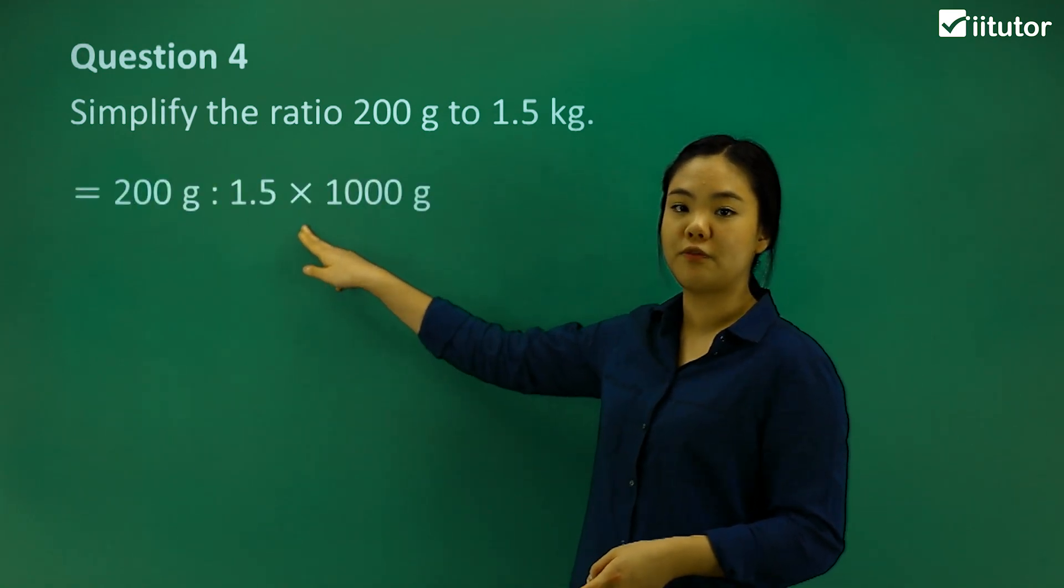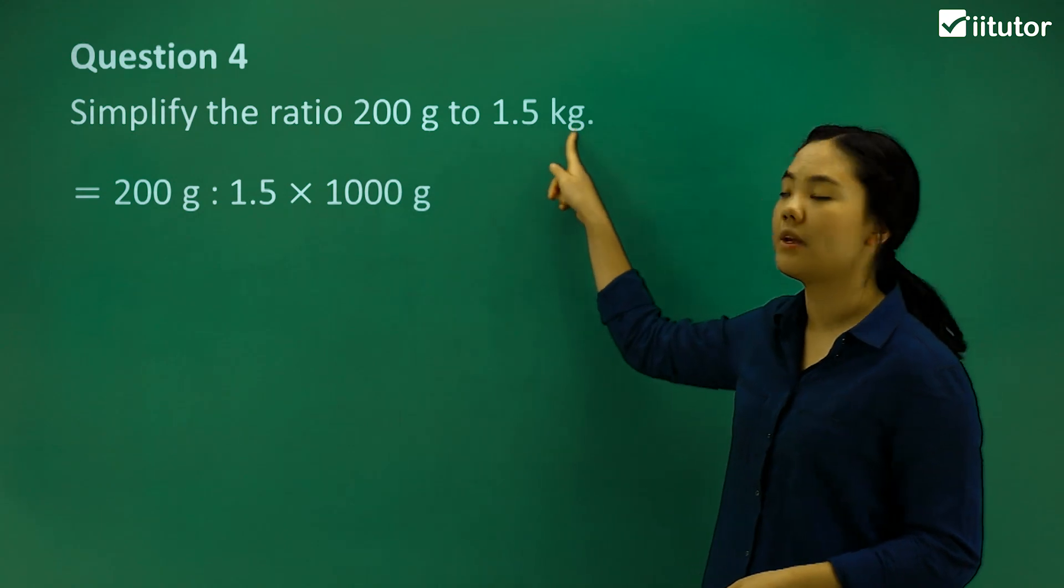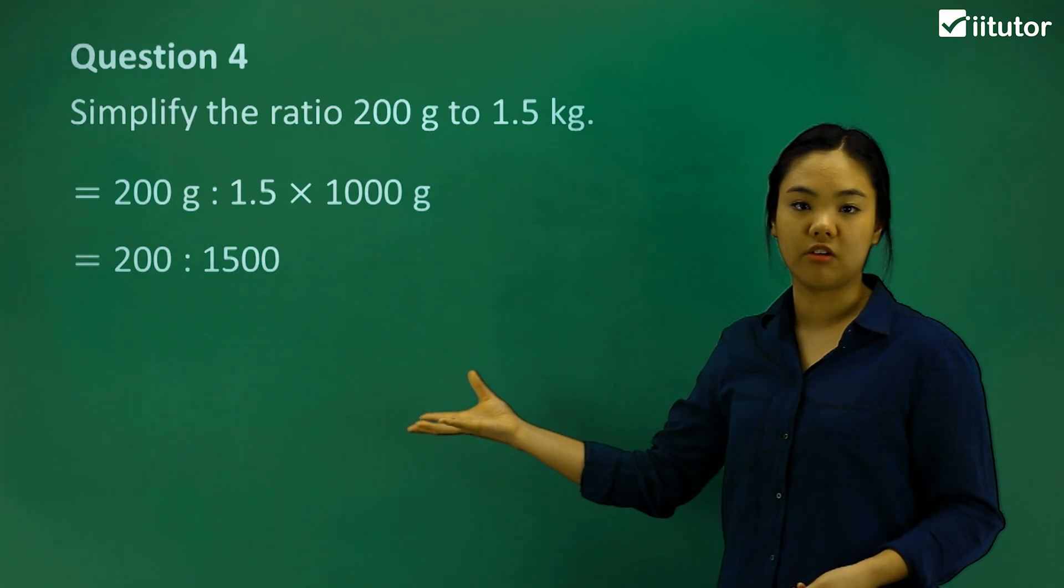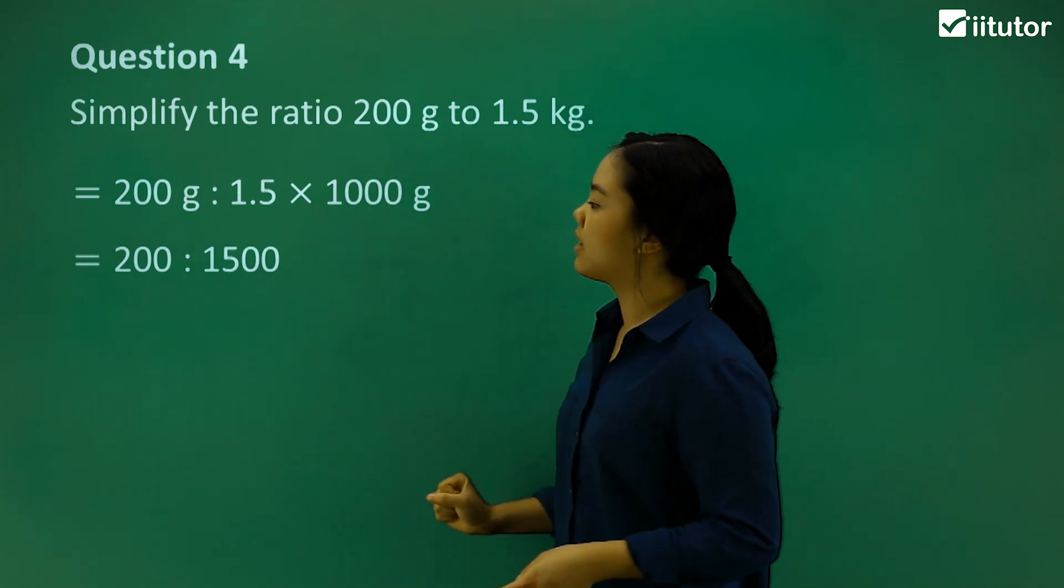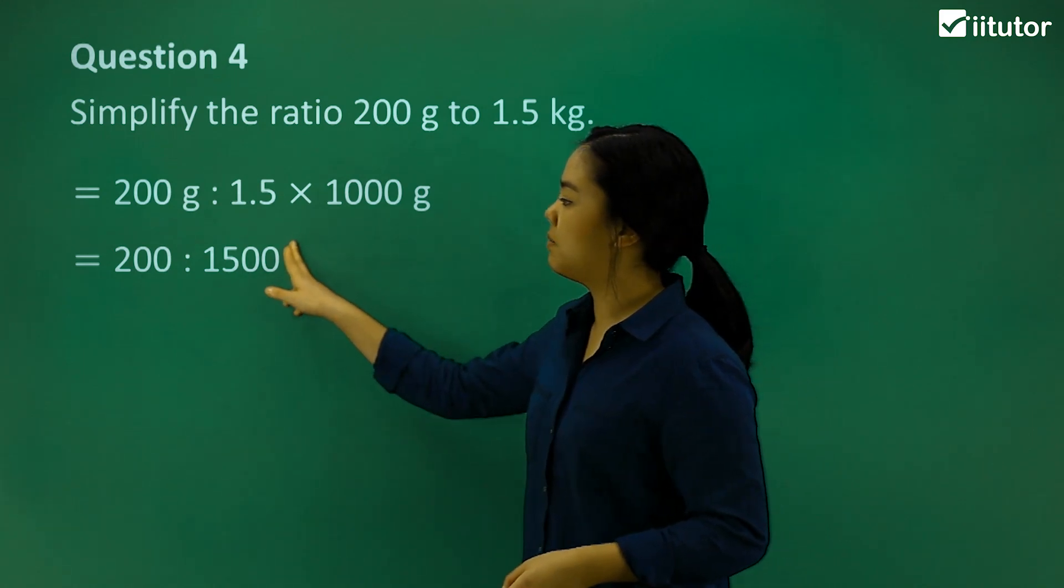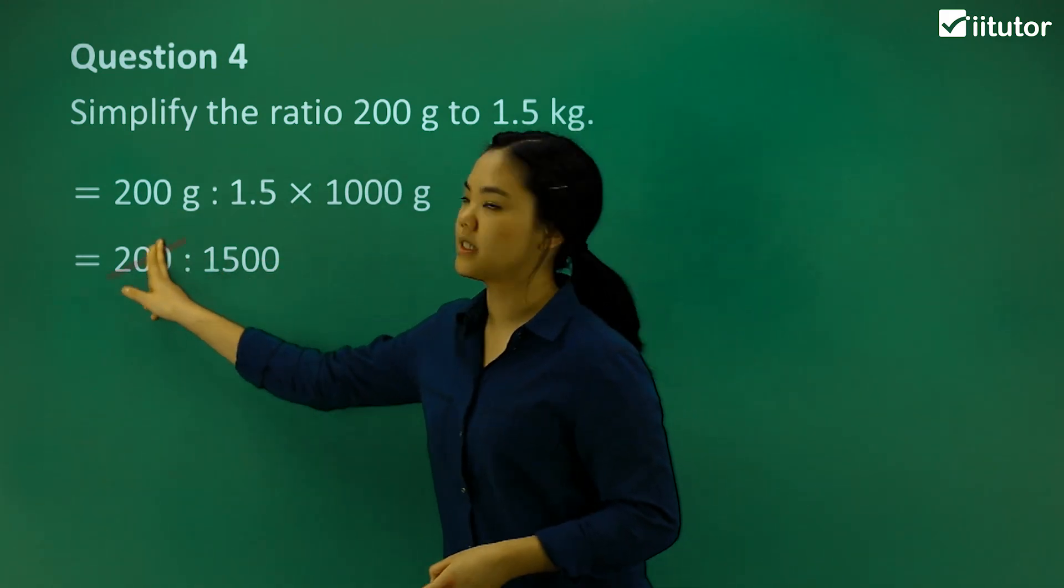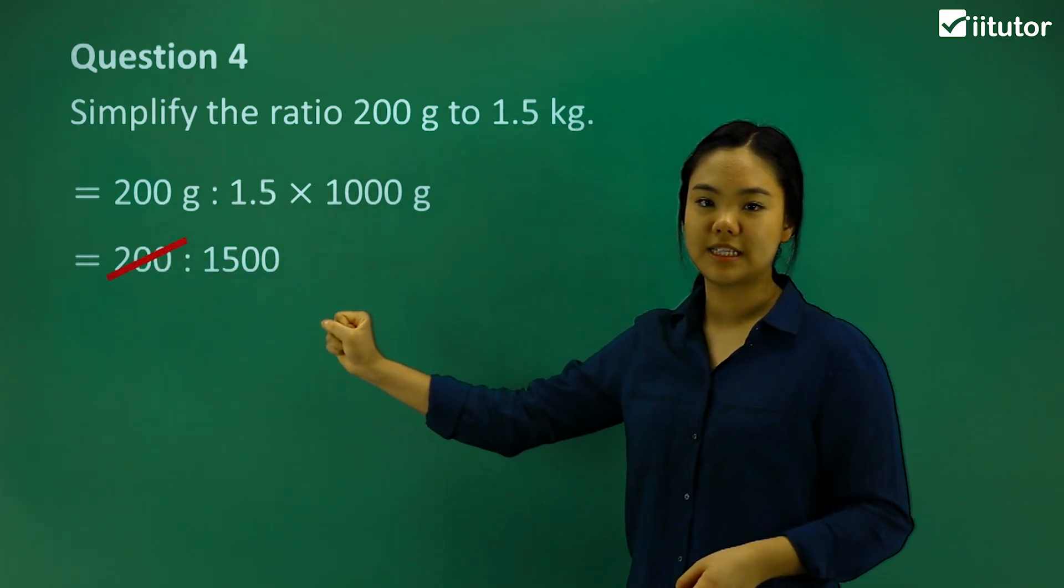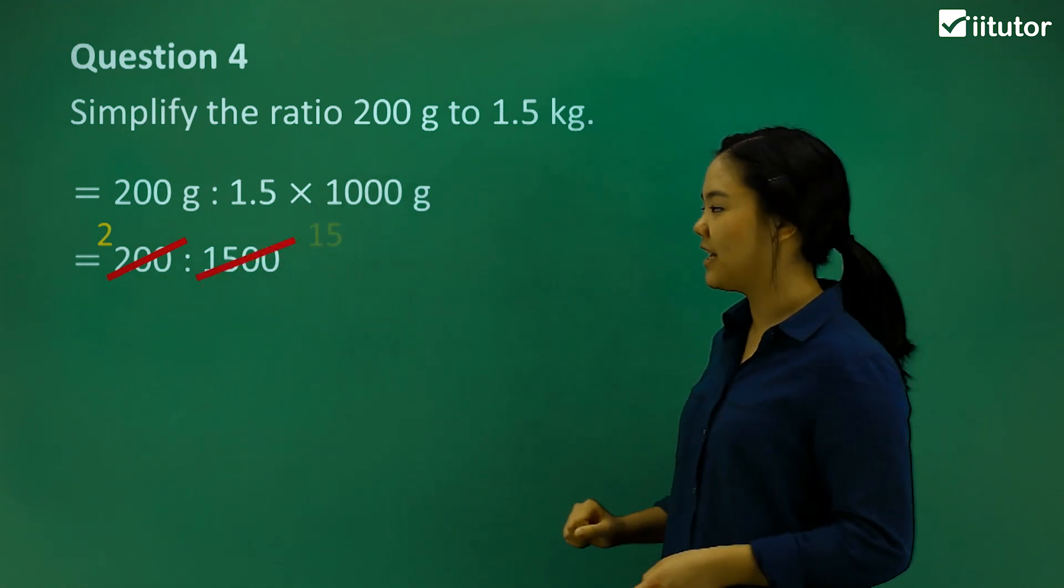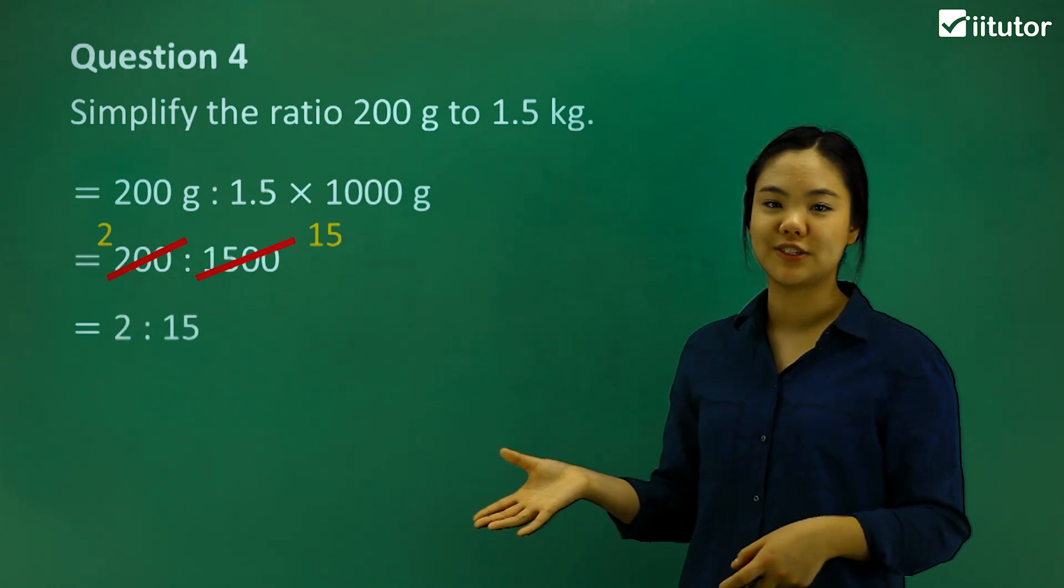That's 200 grams to 1.5 times 1,000 grams, because that's how many grams are in a kilogram. So we can say it's 200 to 1,500. And we can divide it by 100. So we cross that out. That's 2. And then cross this out. That's 15. So the final ratio is 2 to 15.